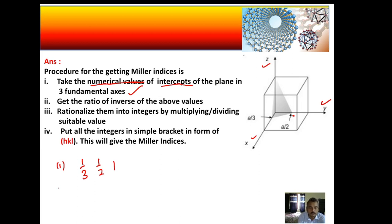Second step is: get the ratio of the inverse of the above values. Let me take the ratio of inverse. So the inverse of 1/3 is 3, the second ratio is 1 divided by 1/2 which is 2, then the third one is 1/1 which is 1.